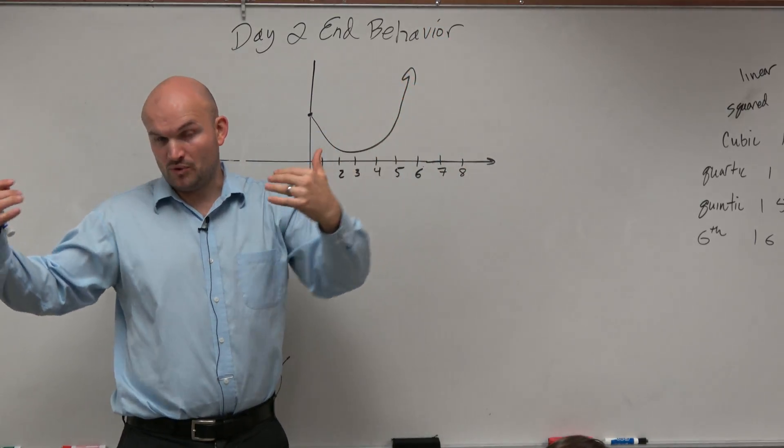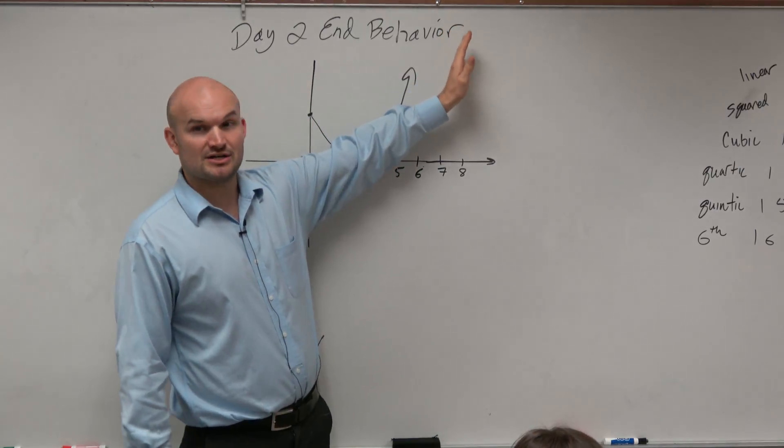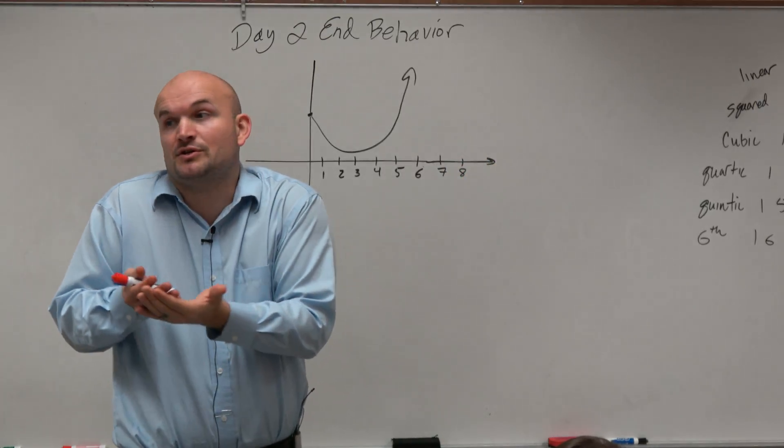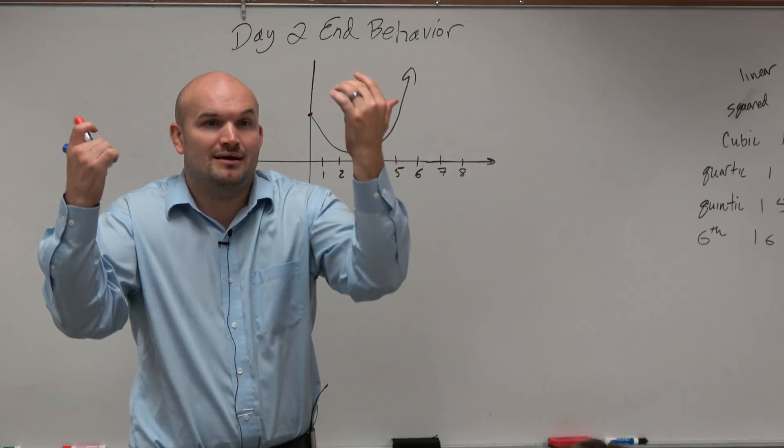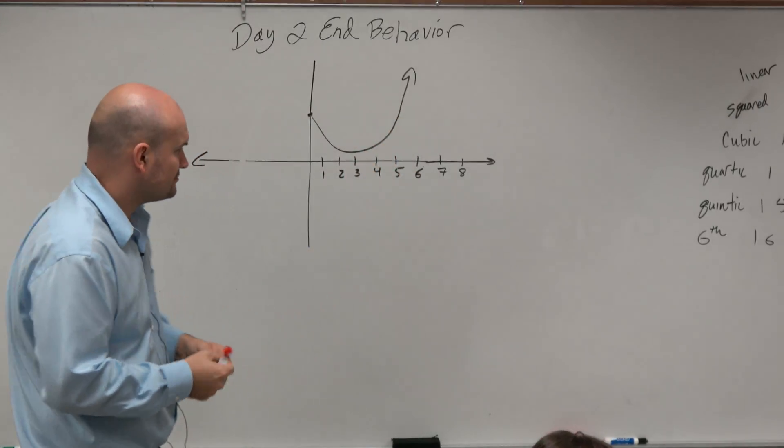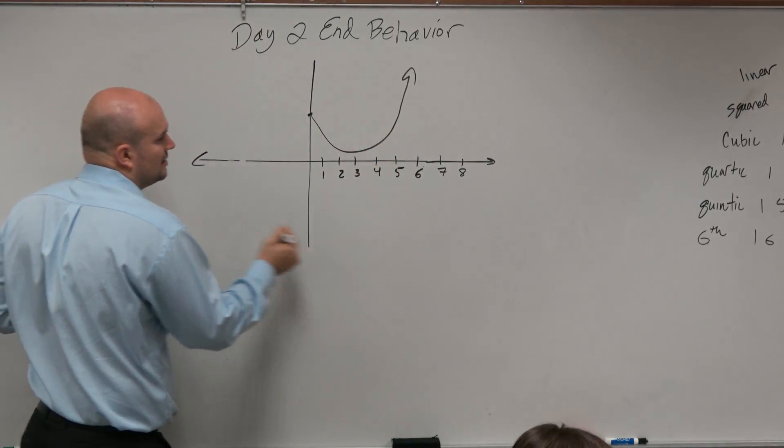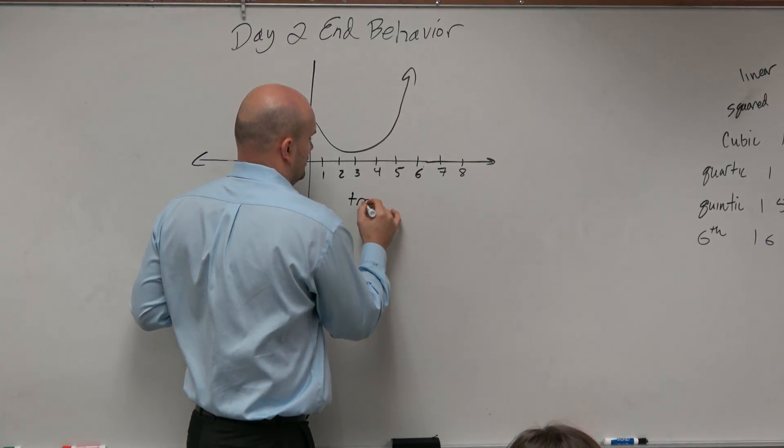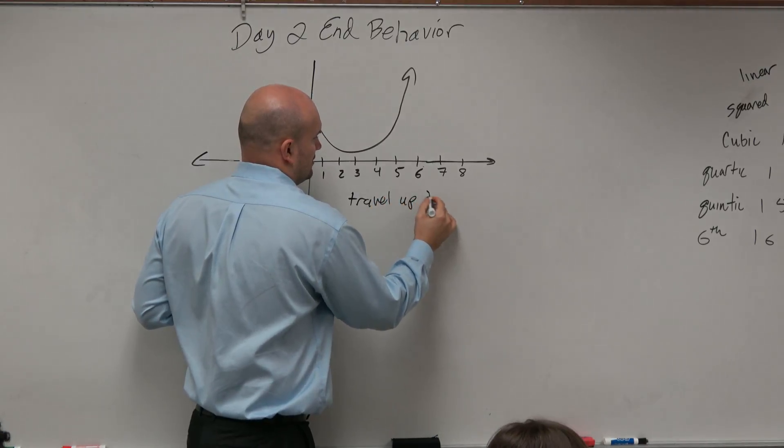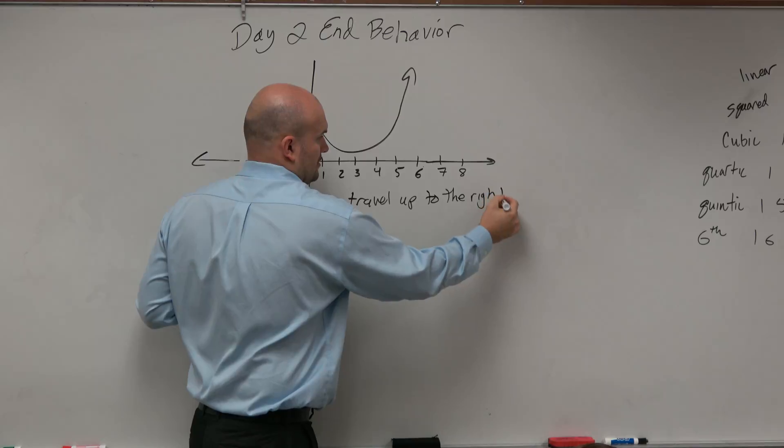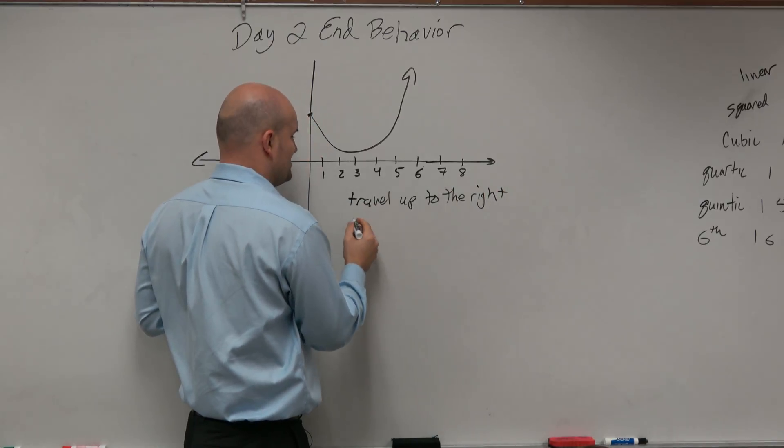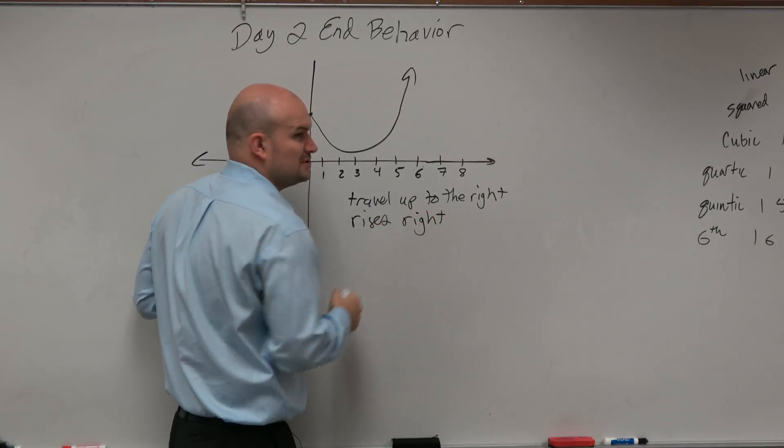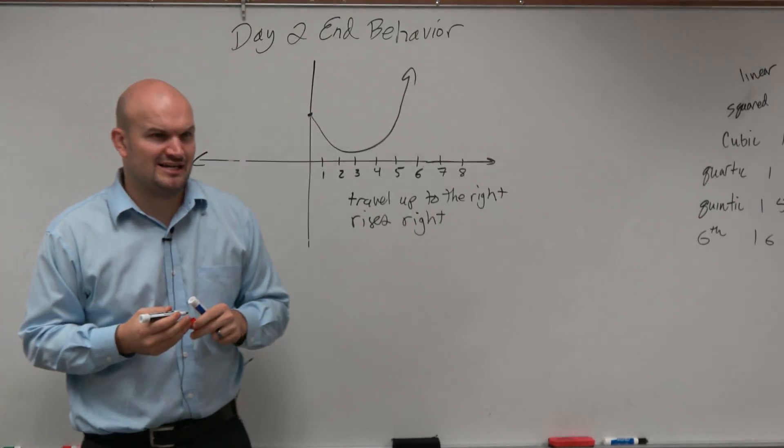So the end behavior is our way to describe the graph continuing in this direction. Which very basically we can say, is the graph going up or is the graph going down? And we could say the graph is going up. So a couple ways in algebra 2 that we describe it, saying the graph travels up to the right. This is very explicit. Sometimes we'd also simplify that and say it rises right.